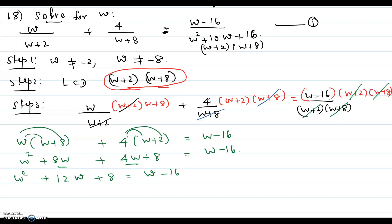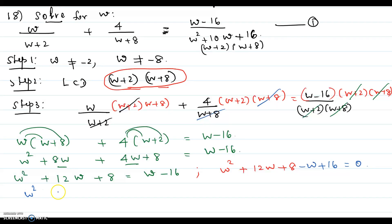So you move all the w terms to one side. You get w squared plus 12w plus 8 minus w plus 16 equal to 0. So you get w squared plus 11w plus 24 equal to 0.